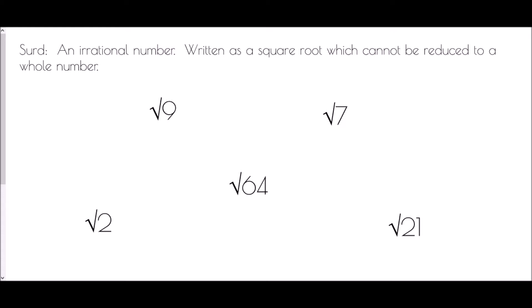The first one is root 9. Can we work out the answer to that as a whole number? Well the square root of 9 is plus or minus 3, and because we can do that, root 9 is not a surd. Root 7 — is 7 a square number? Is there something you multiply by itself to make 7? No, and therefore root 7 is a surd.